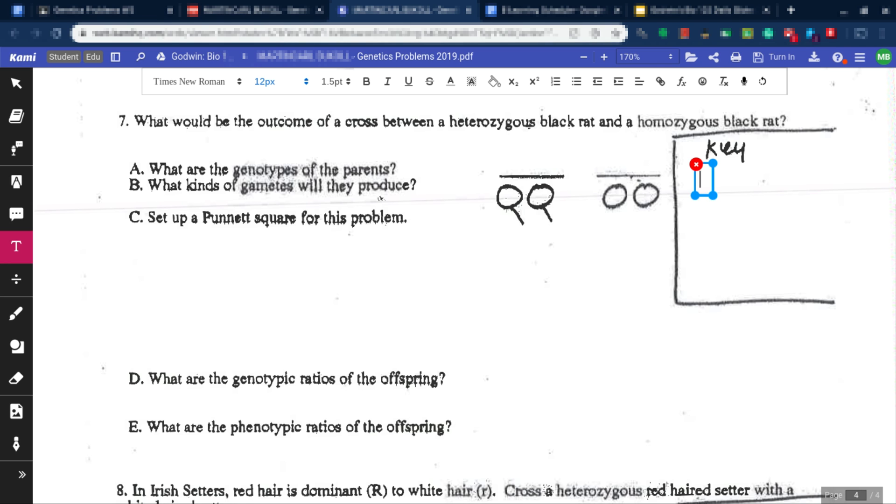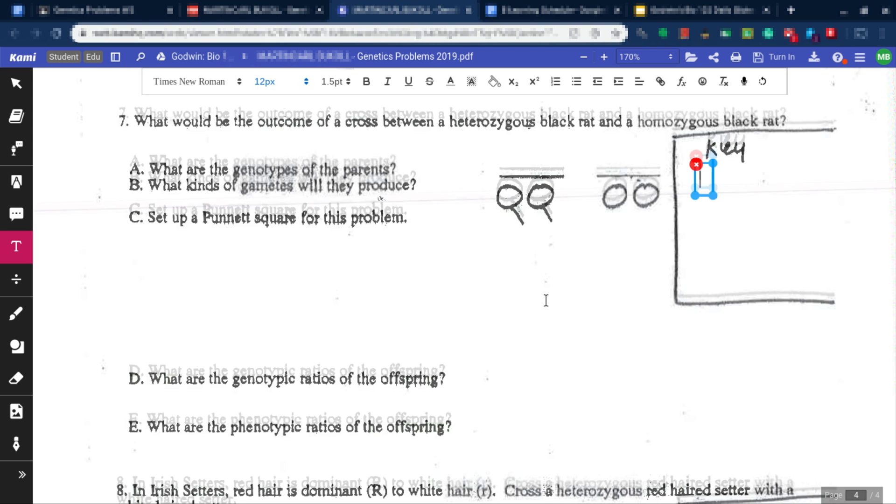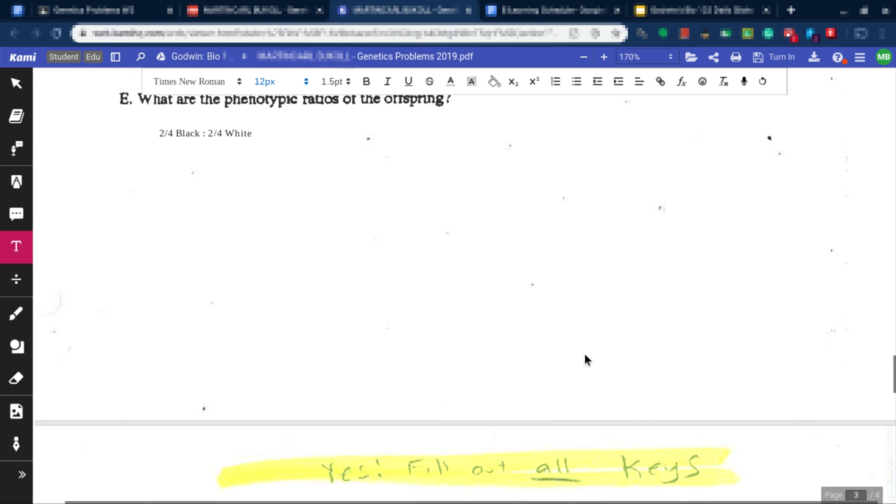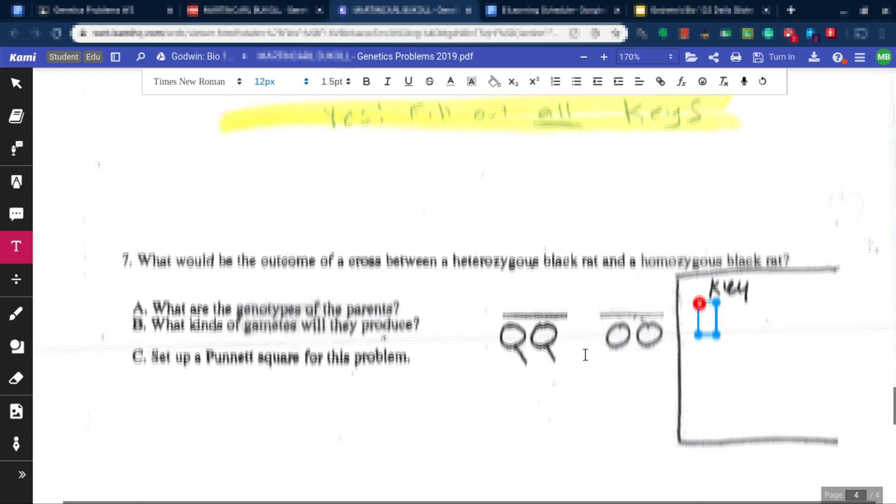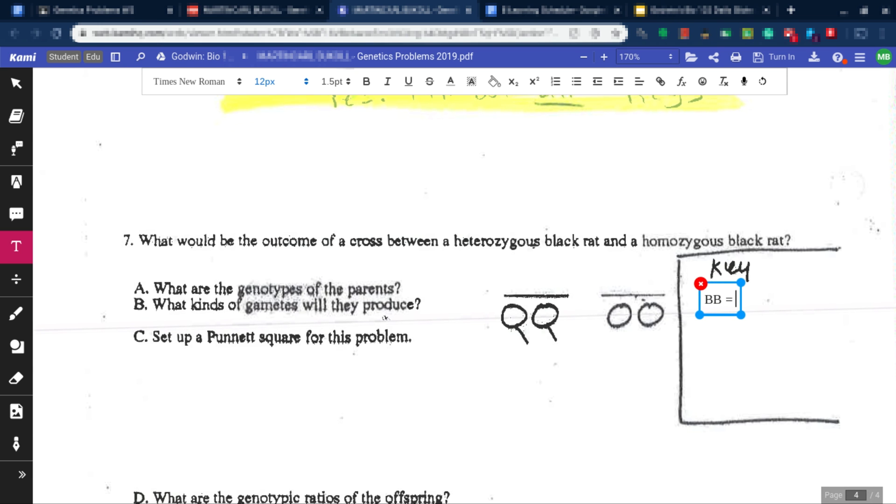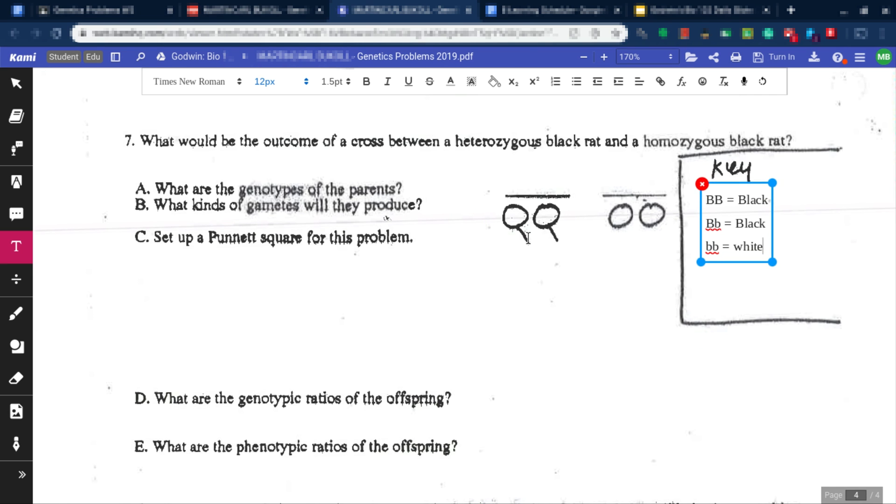So let's actually do the homework. What would be the outcome of a cross between... Okay, wait, I gotta do the key first. So the key, I believe... What have I been doing here? So it's been the Bs. Alright, so BB equals black. BB equals black. And little b, little b equals white. Alright, just kind of click off.